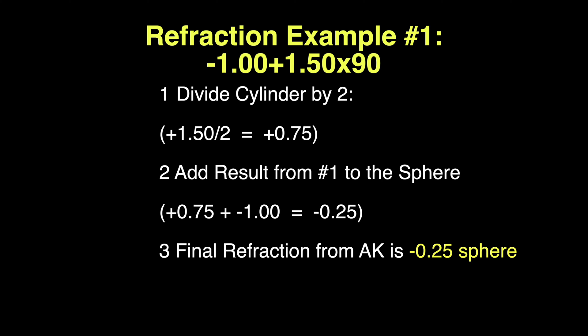Therefore, this refraction, if treated with astigmatic keratotomy, should result in a minus 0.25 spherical post-operative refraction, which is highly desirable and compatible with excellent long-distance vision.